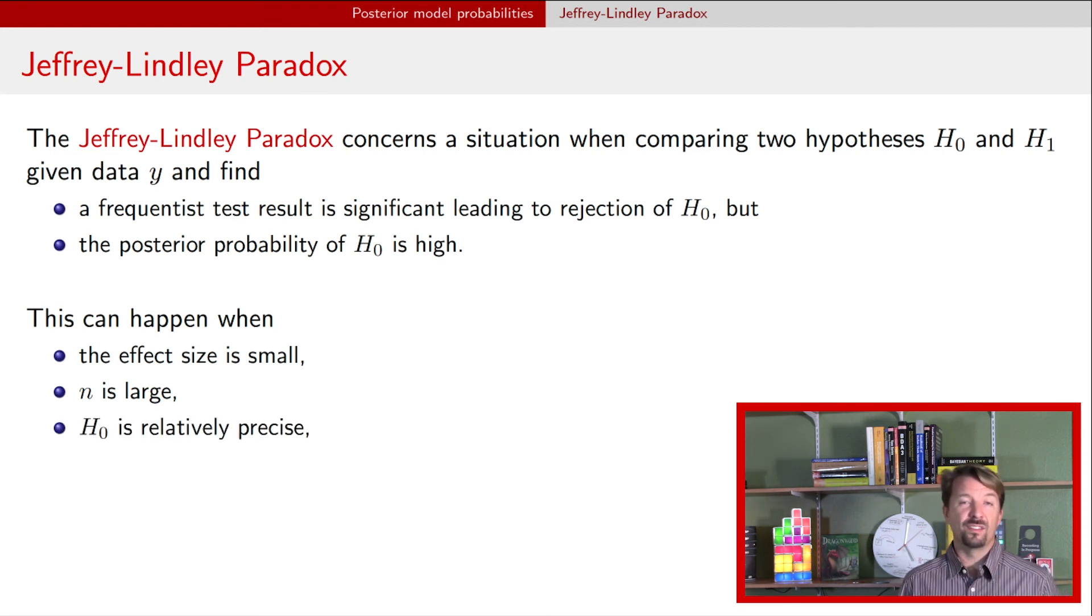We need to have a null that we call relatively precise. This can happen in other circumstances, but when you're dealing with p-values, usually your null is that the parameter is equal to a particular value. And that's what we mean by precise. But there are other ways that it can be relatively precise.